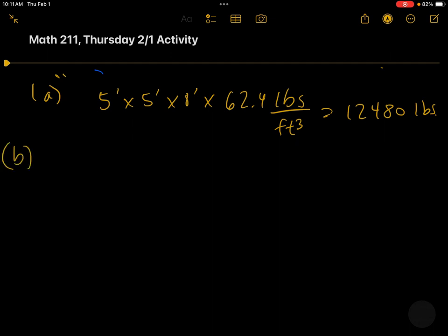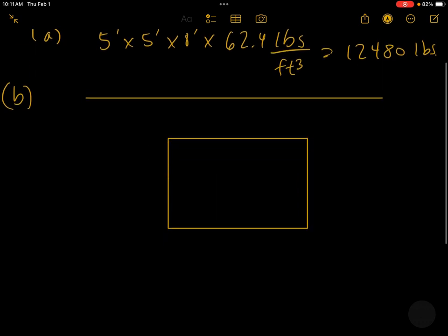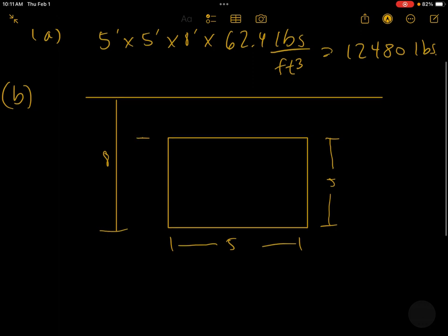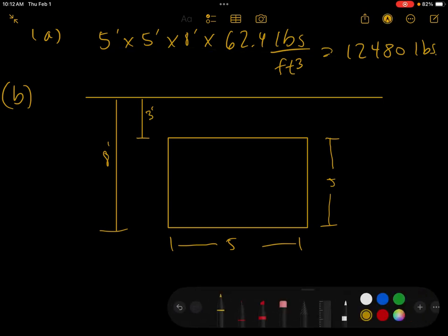For part B, now we have a problem here. So we're resting vertically. So how deep is it? It's 8 feet deep. So we go, here's the surface. Here's our plate. Here's our plate. And the plate is 5x5. The water depth is 8 feet. So we have, here, let me make it straight here, 8 feet. And so this is 3 feet. Okay, so we go back to the drawing board here.